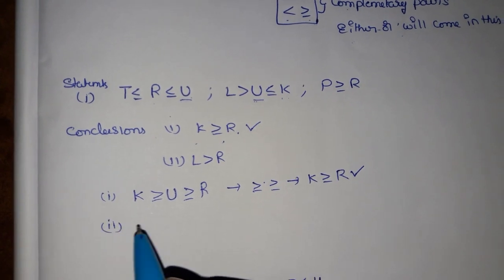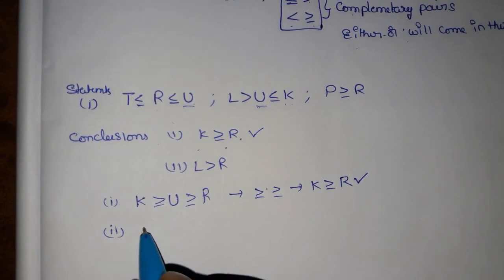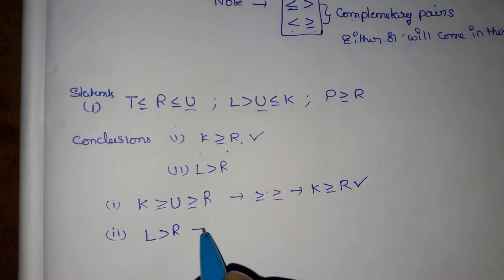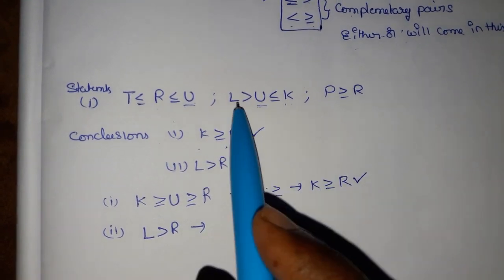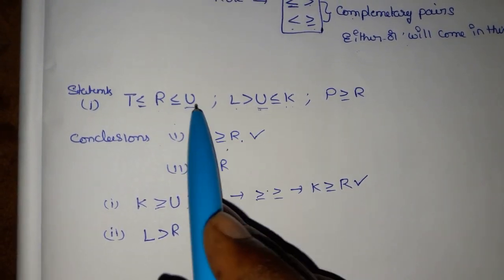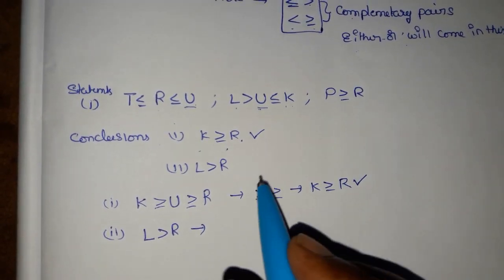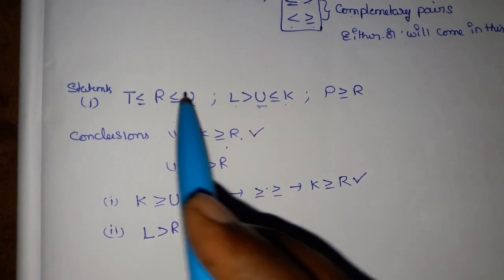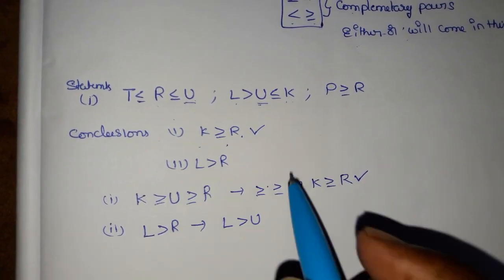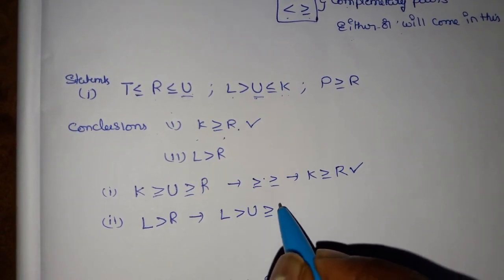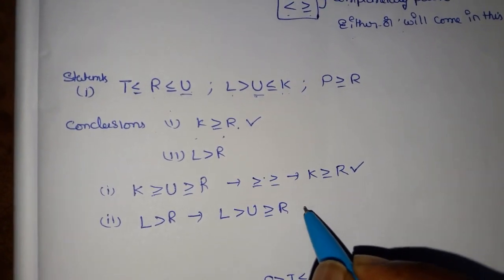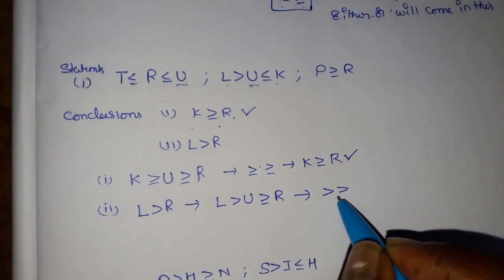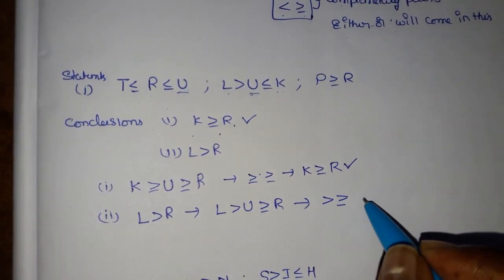Second conclusion: l greater than or equal to. So from l to u: l greater than or equal to u. From u to r: greater than or equal to r. The final result will be greater than and greater than or equal to, giving l greater than r.